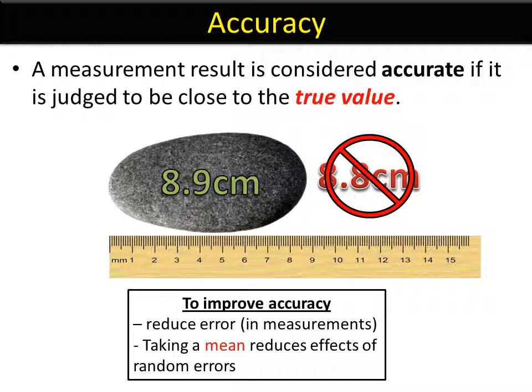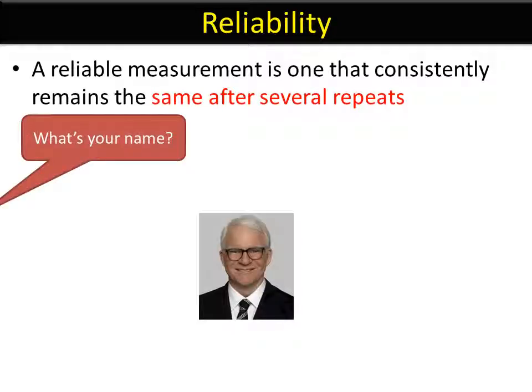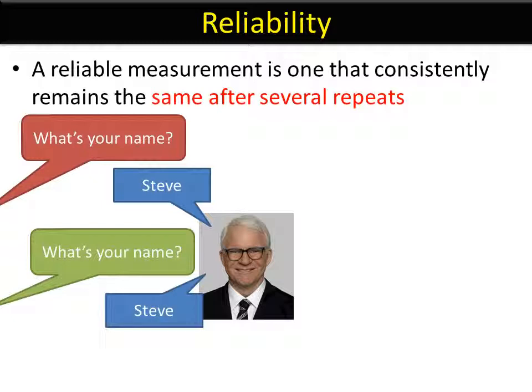You need to make sure you know how to take a mean, adding up all the results and dividing by the number of results. A reliable result is one that will bear up to repeat, so you'll get the same answer over and over again. So asking somebody, what's your name? You should always get the same answer.